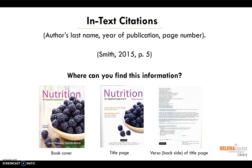When you include information from an outside source in your paper, you must first add an in-text citation to describe the source in the body of the paper. The in-text citation includes three pieces of information: the author's last name, the year of publication, and the page number for the information.